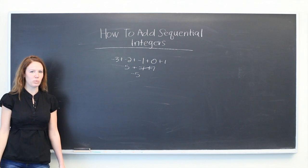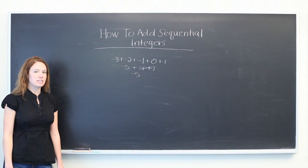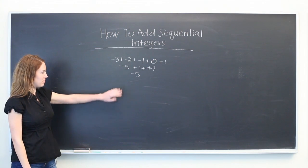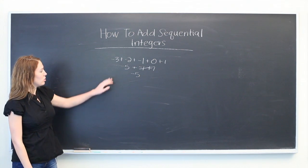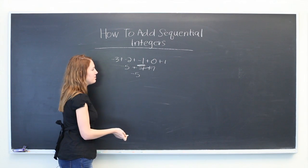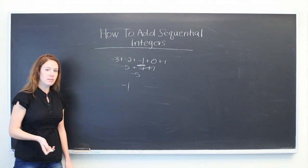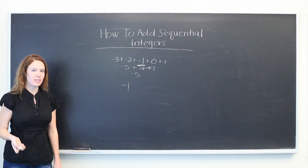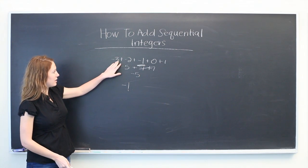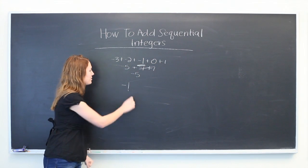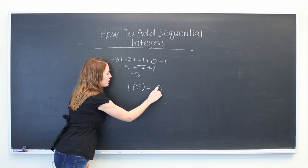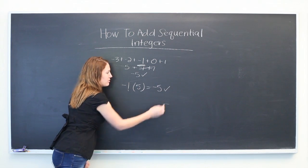Now a different way to do this is to take the median or the middle number of this series of numbers, which for this we would say the middle number is -1. Take the median and multiply it by the number of terms that you have. So -1 times 5. And this will also give you the same answer.